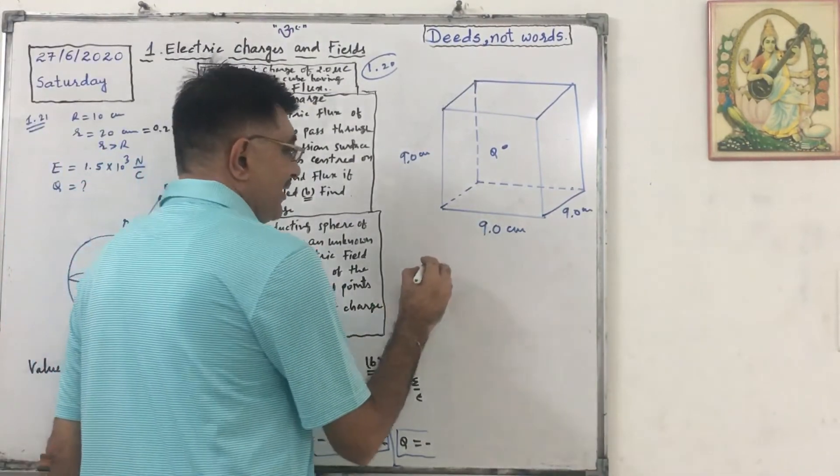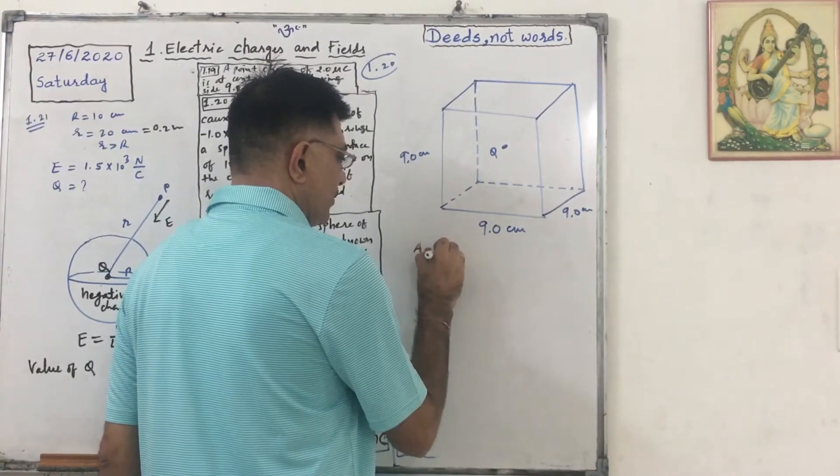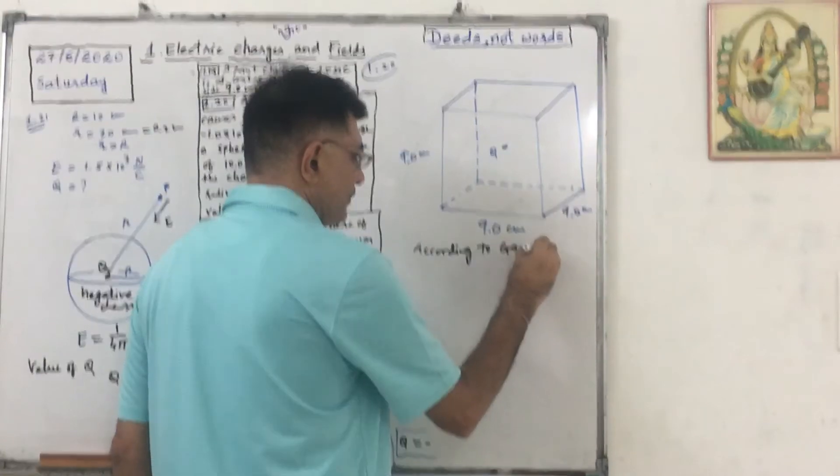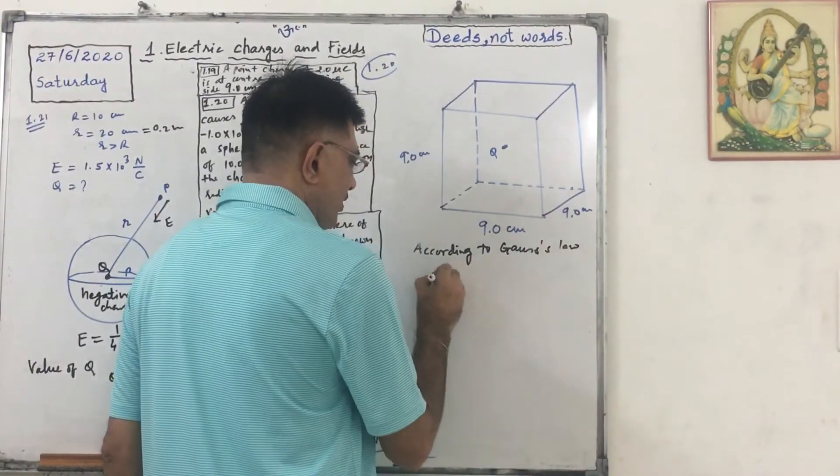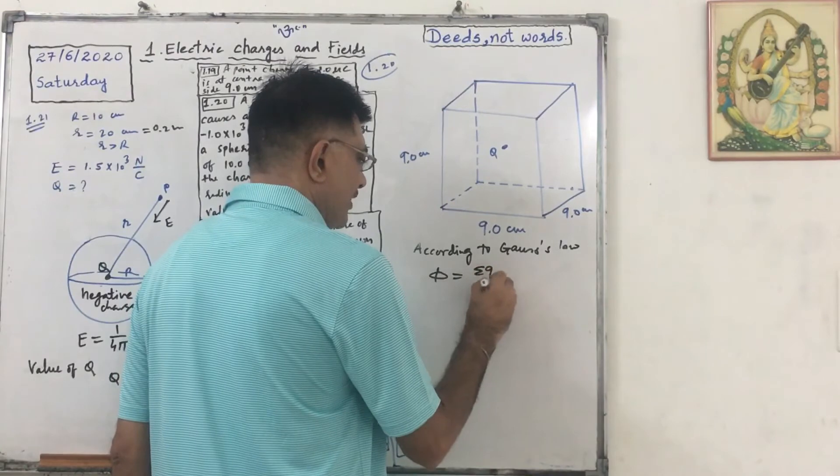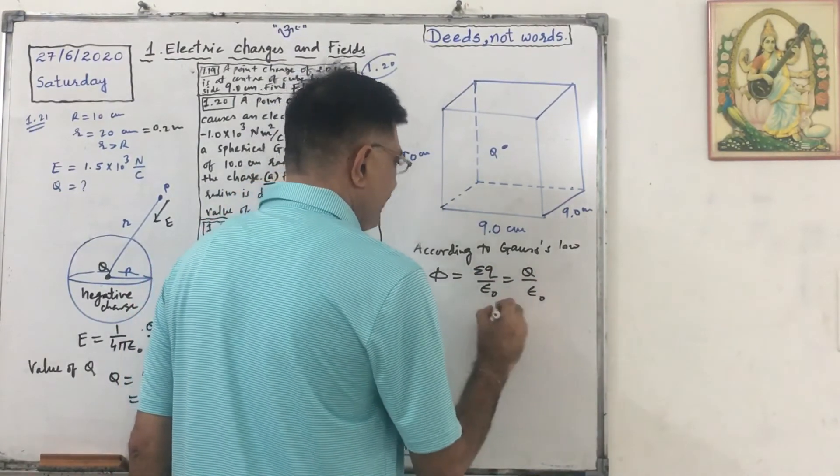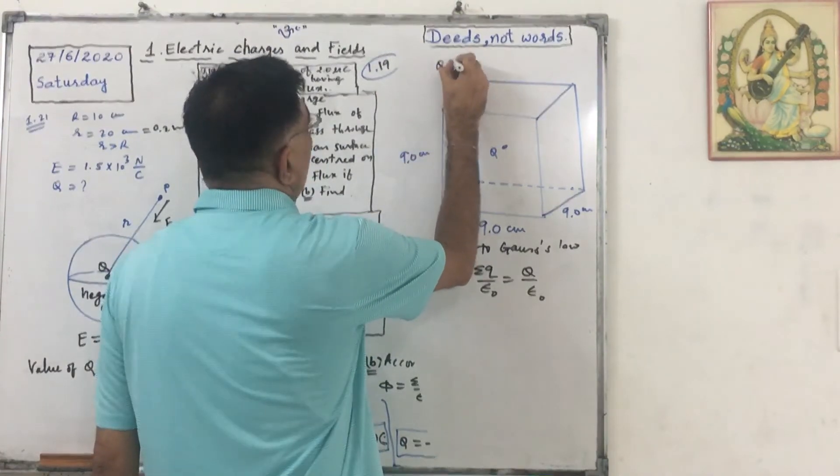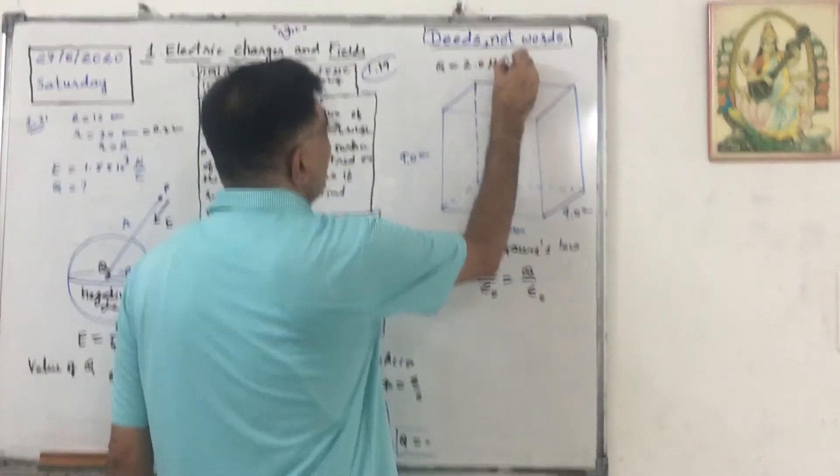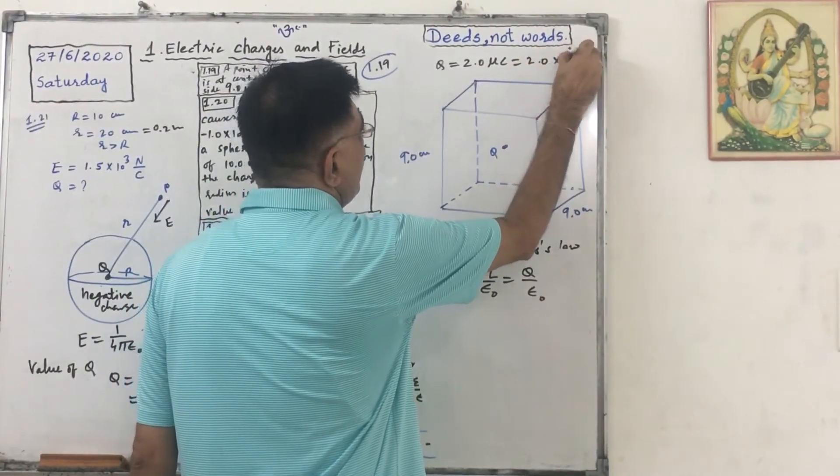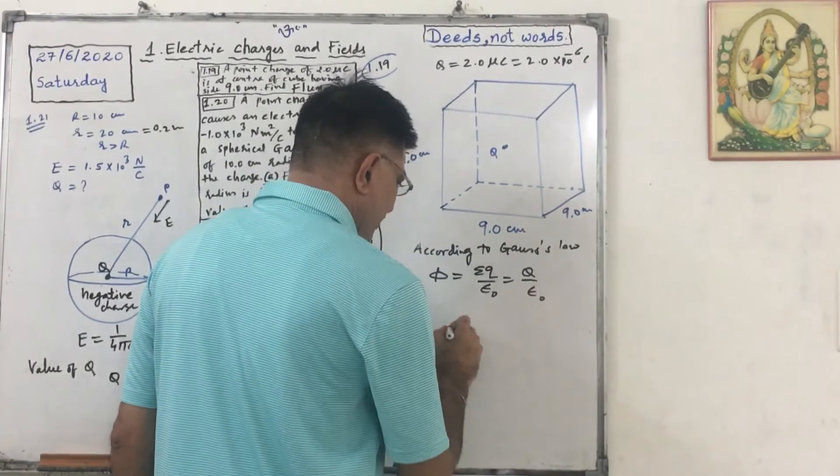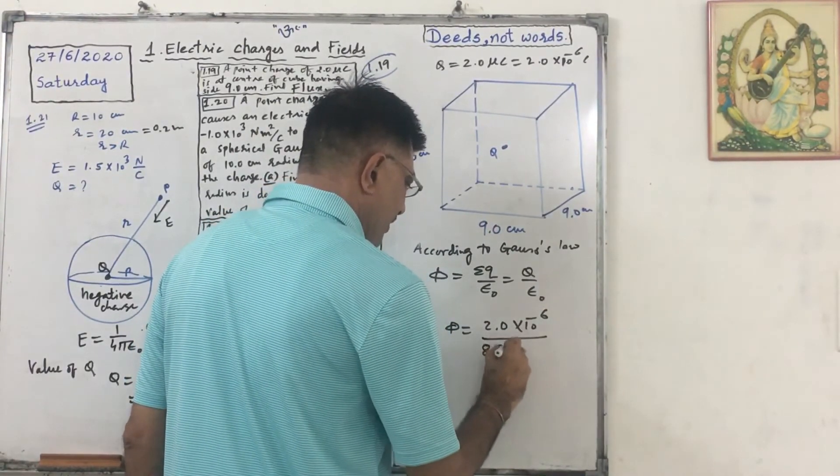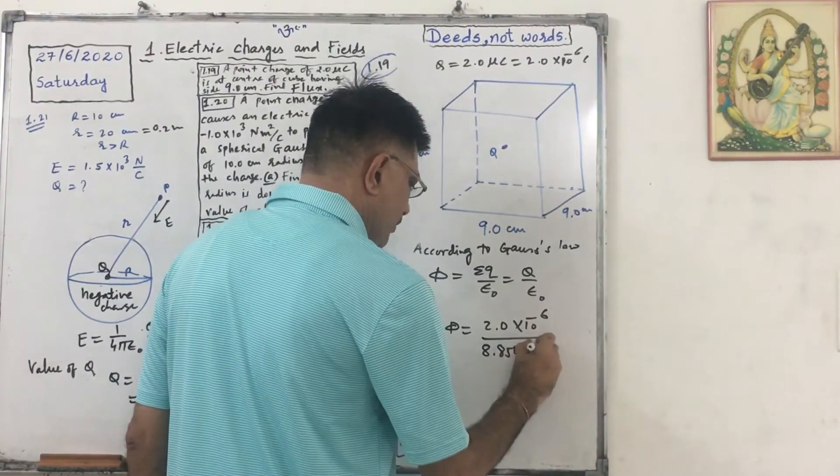We know that according to Gauss's law, flux equals sigma Q upon epsilon not, or Q upon epsilon not. Q is given as 2 micro coulomb, 2.0 into 10 raised to minus 6 coulomb. So I can write here 2.0 into 10 raised to minus 6 upon 8.854 into 10 raised to minus 12.